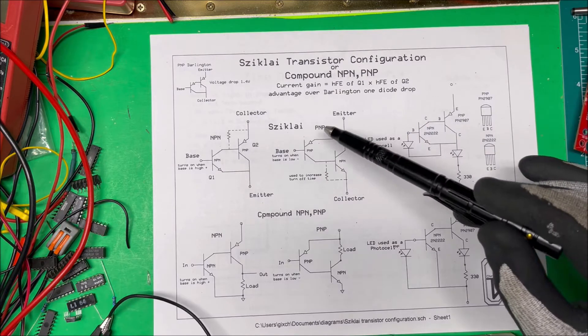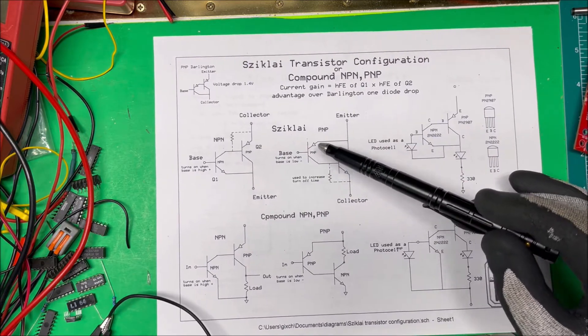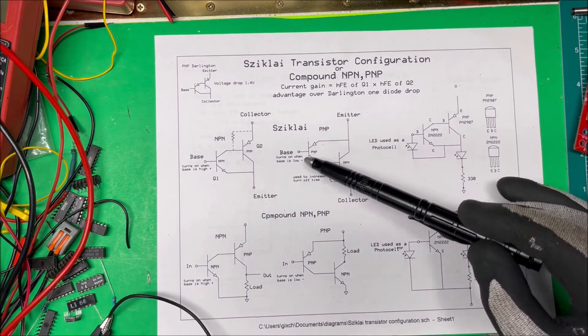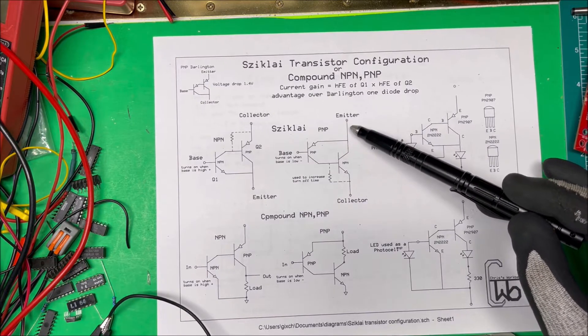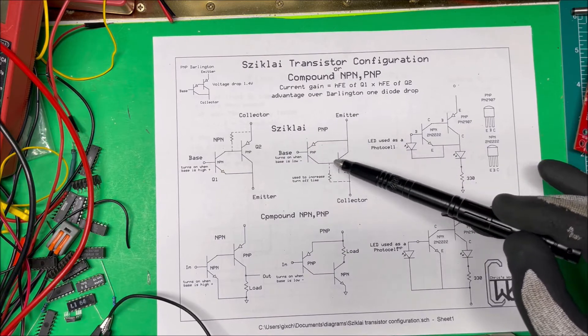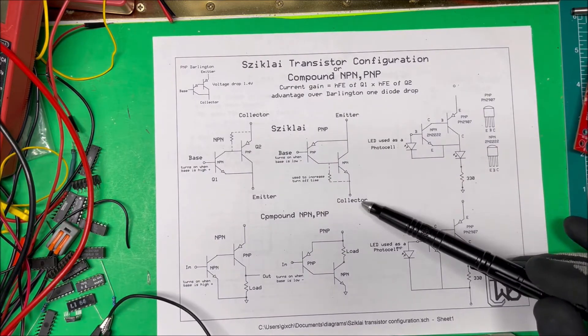In the PNP type we have this one here as a PNP and this is the NPN over here. If the base on the PNP goes low, then that'll bring the base on the NPN high through here and it'll turn this on this way. This will be the emitter, collector, and base over here.